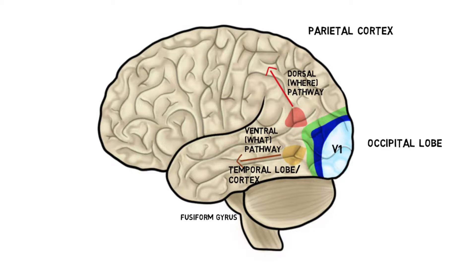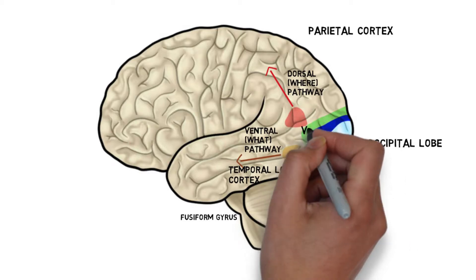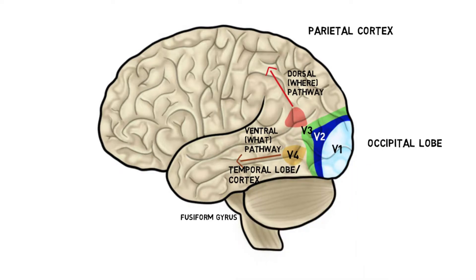The ventral pathway encompasses visually sensitive areas such as V2, V3, V4, and regions of the inferior temporal cortex of the temporal lobe, including regions such as the fusiform gyrus.